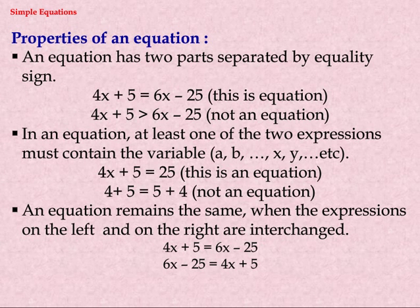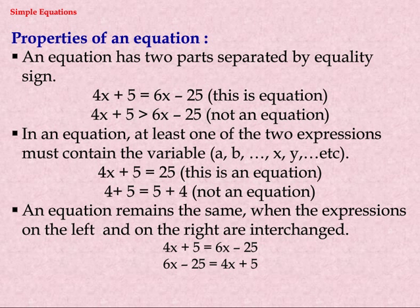Properties of an equation. First: an equation has two parts separated by an equality sign. For example, four x plus five equals six x minus twenty-five is an equation, whereas four x plus five greater than six x minus twenty-five is not an equation. Second: at least one of the two expressions must contain a variable. Four x plus five equals twenty-five is an equation, but four plus five equals five plus four is not an equation.